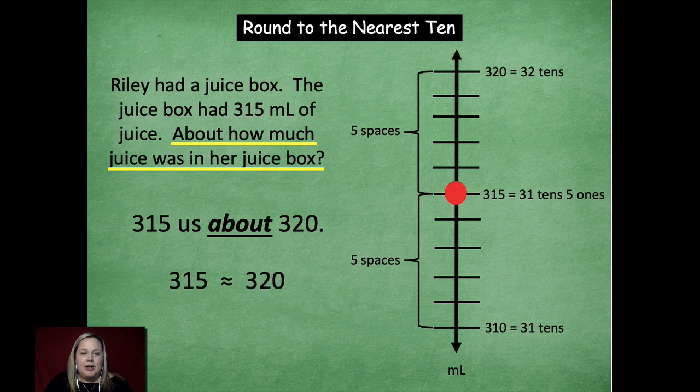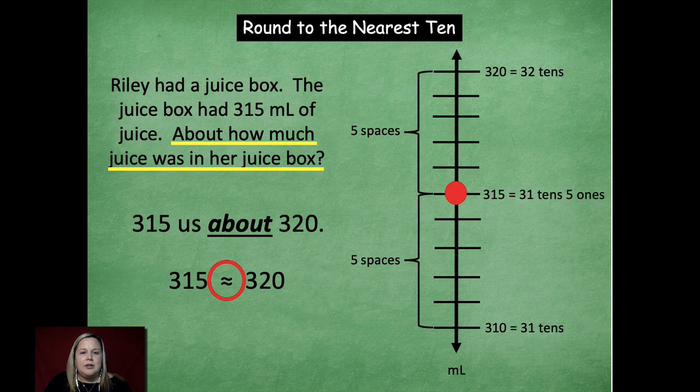So three hundred fifteen is about three hundred twenty. Remember, you can use your approximate symbol. That's what that little guy is in the circle there. So three hundred fifteen is approximately three hundred twenty. Okay?